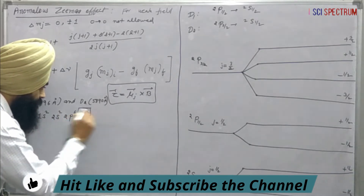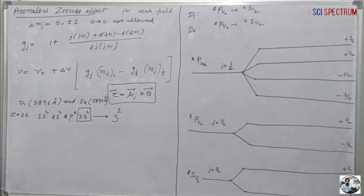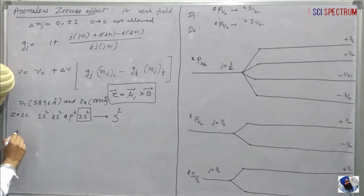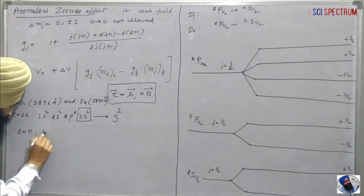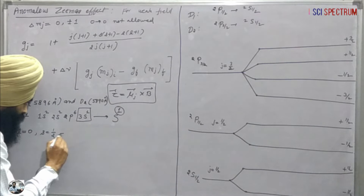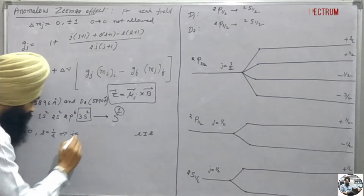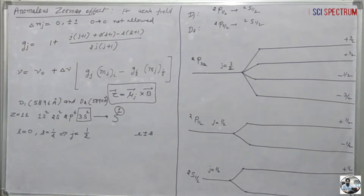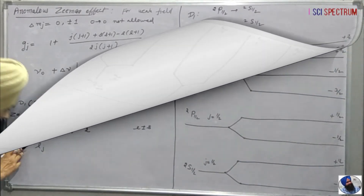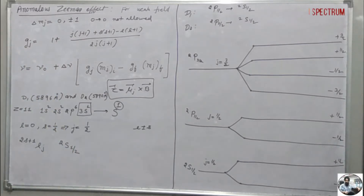We will consider only the optical electron — the valence electron. From this electron it is clear that we have an s¹ state. For the s state, l equals zero and s equals half. Using these two values we can find j using l plus/minus s, which gives j equals half. So using the term value formula (2S+1)L_J, the term value is 2s½.